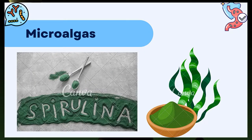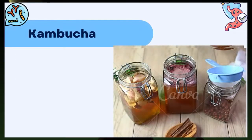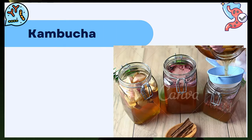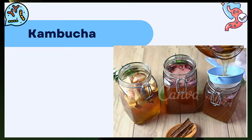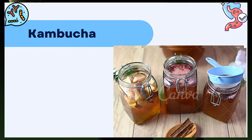En la dieta japonesa suele ser habitual el consumo de microalgas como kombu, chlorella o espirulina, que se añaden en caldos, ensaladas o sopas, e incluso se pueden hacer smoothies con ellas. La kombucha es una bebida probiótica que se elabora a partir de té fermentado por microorganismos de nombre SCOBY; la kombucha natural no posee gluten, no lleva gas ni azúcar y es una bebida 100% vegana.